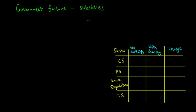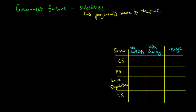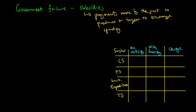This lecture will talk about how government fails to allocate resources effectively by allocating subsidies to the market. Firstly, what are subsidies? Subsidies are essentially payments made by the government, either to producers or buyers, to encourage spending. This basically combats a few of the market failures we've talked about previously.